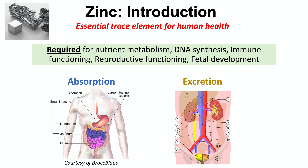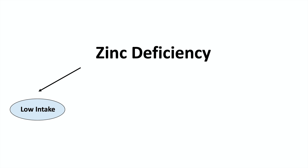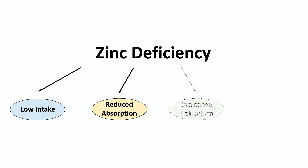We can also lose zinc from the gastrointestinal system through feces, and from the renal and urologic system through urine. Those are the two ways we can lose zinc. The main causes of zinc deficiency include low intake — not getting enough from your diet — and reduced absorption, such as from a condition like inflammatory bowel disease that causes issues with zinc absorption.